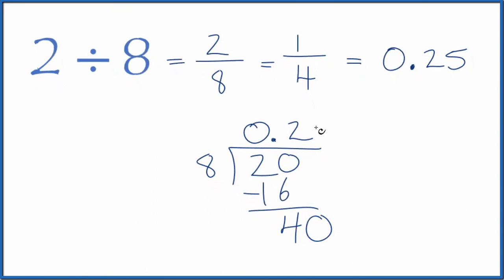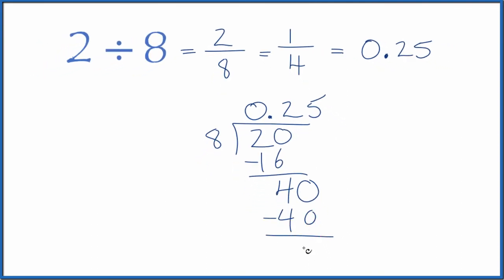Let's call this 40, and then we'll move over 1. 5 times 8. That gives us 40. We subtract. No remainder.